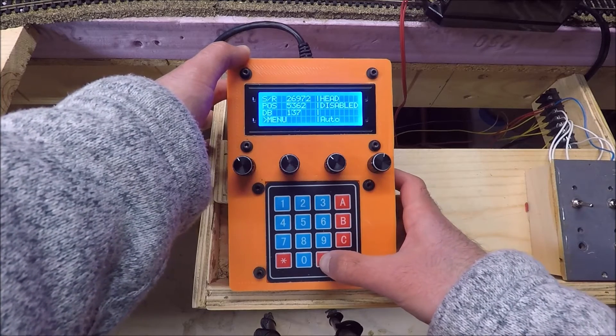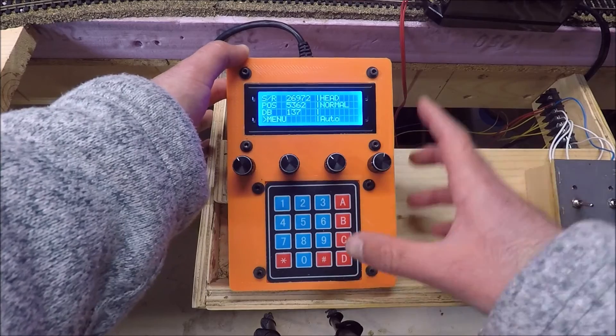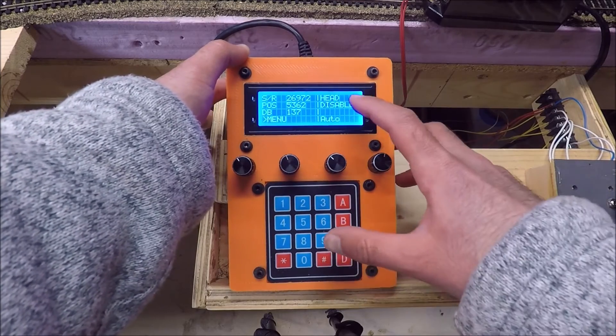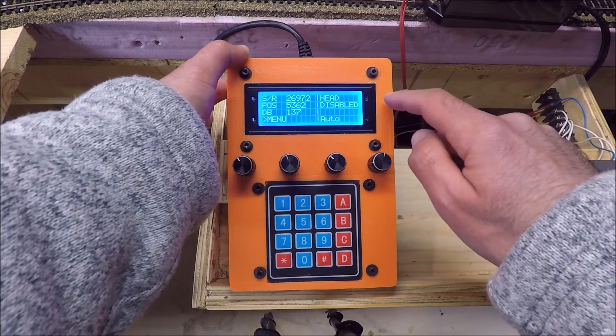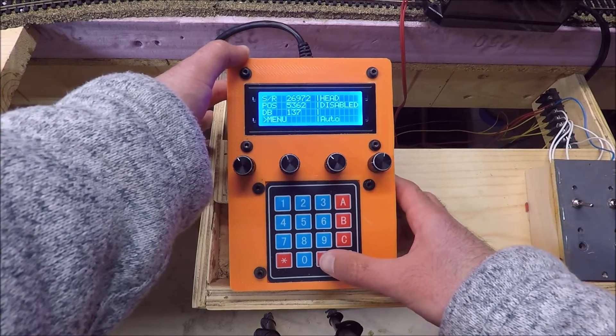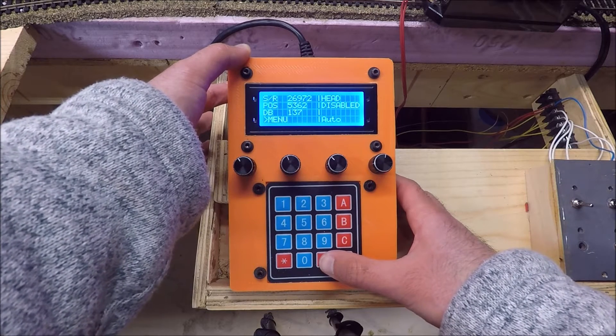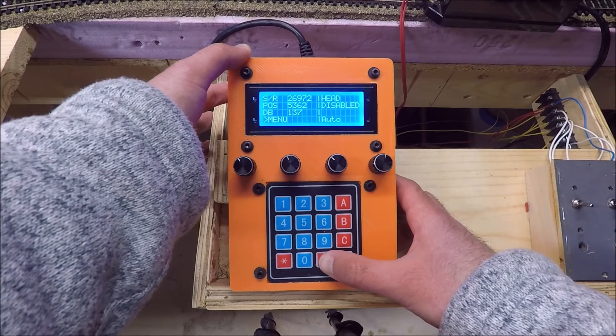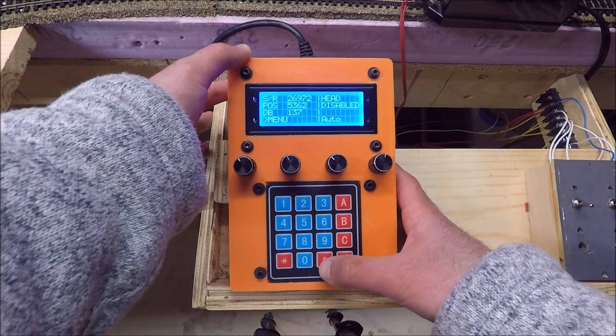This switches the polarity of the turntable. Now this happens automatically in the software. It automatically does it. But if for some reason you wire your roundhouse wrong, if you've got the polarity switched on a couple of the lines or if you're using this controller in manual mode, you can switch that just by pressing a button.